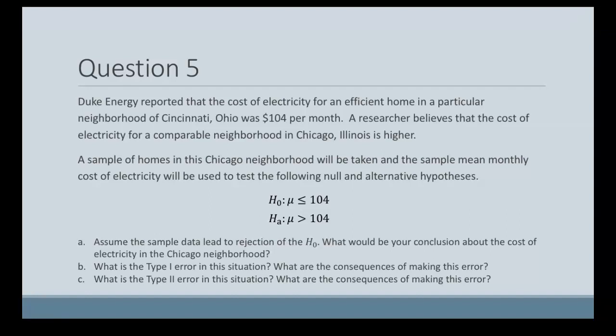So we have three parts of this question. First, we need to assume that this sample data leads to the rejection of the null hypothesis and say what our conclusion would be about the cost of electricity in that Chicago neighborhood. Then we need to talk about what a Type I error in this situation would be and what a Type II error in this situation would be.